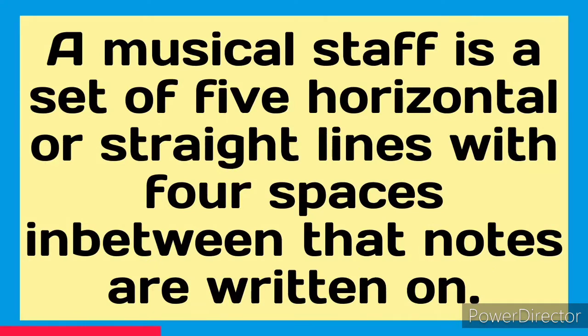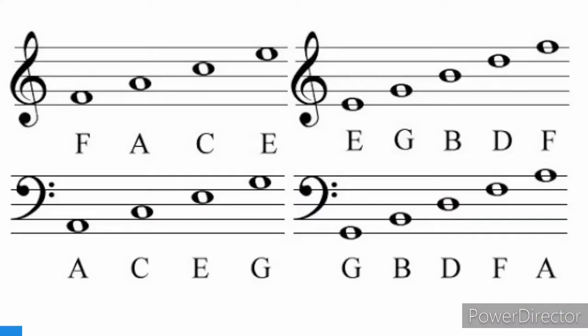A musical staff is a set of five horizontal or straight lines with four spaces in between that notes are written on. We have the spaces to the left and the lines to the right. The treble is on top and the bass is below.